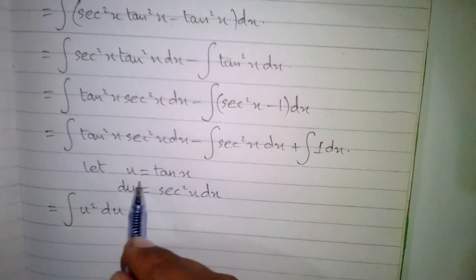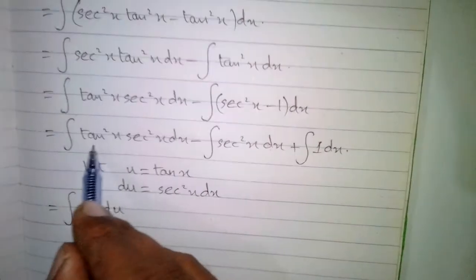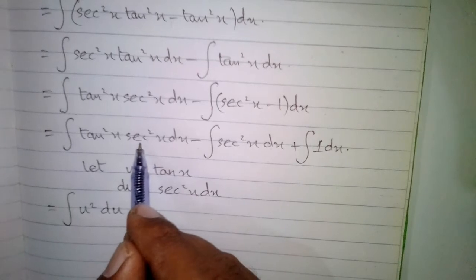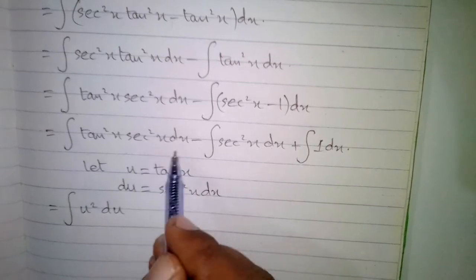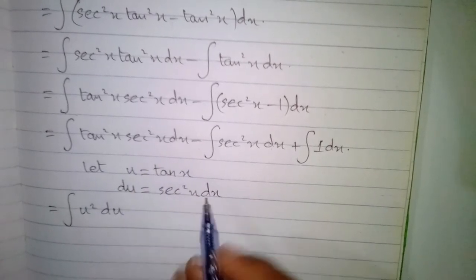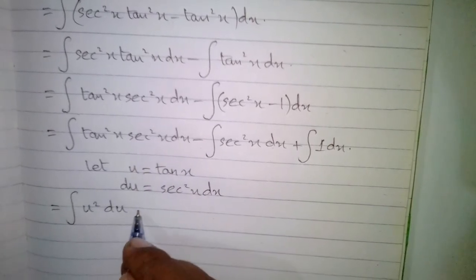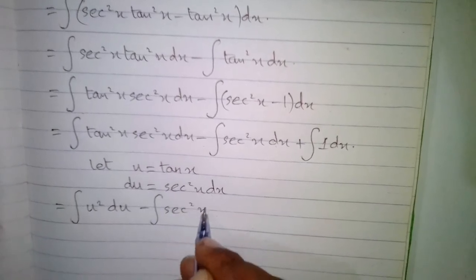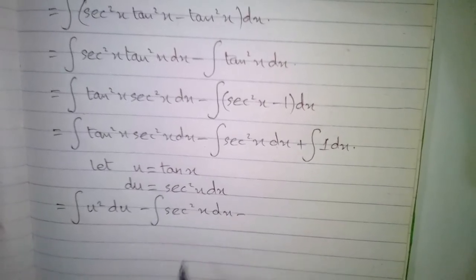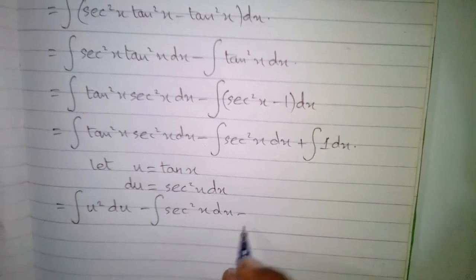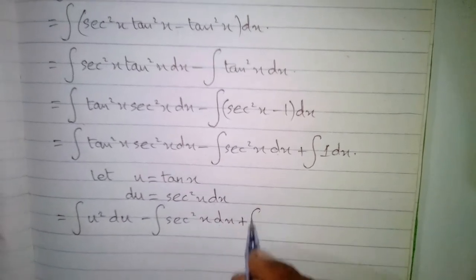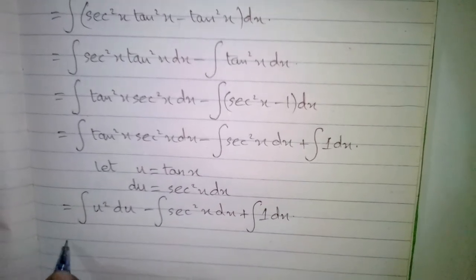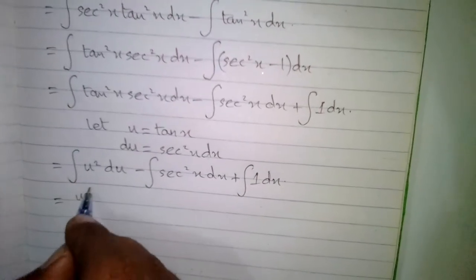We will put u in place of tan x, so we have u², and in place of sec²x dx we will put du. This gives us the integral of u² du, minus the integral of sec²x dx, plus the integral of 1 dx.